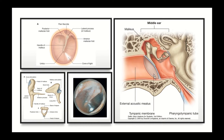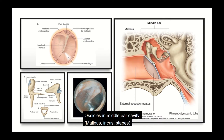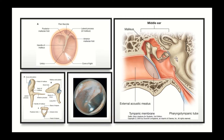The middle ear cavity contains three little bony ossicles. The malleus has a long handle attached to the tympanic membrane. The malleus is attached to the second ossicle, the incus, which has a long handle. The incus is then attached to the third bony ossicle, the stapes — a piston-like structure with a big flat base attached to the inner ear, which also resides inside the petrous part of the temporal bone.